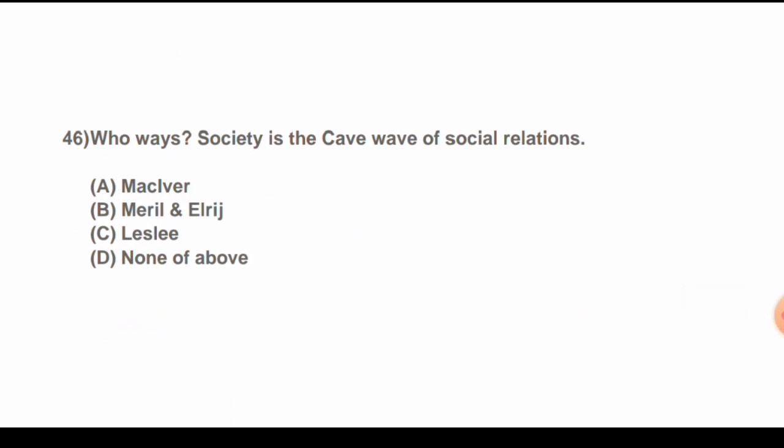Question 46: Who says 'Society is the web of social relations'? Options are: A) MacIver, B) Merrill and Erich, C) Lastly, D) None of the above. The correct answer is B) Merrill and Erich.